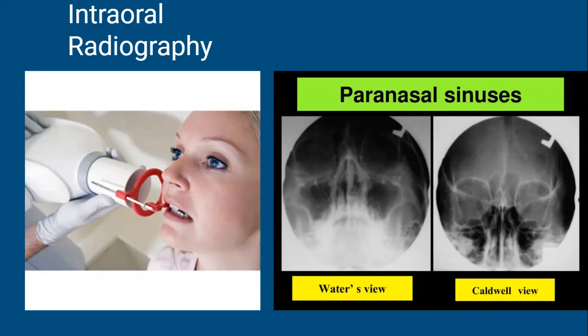Because the Caldwell and Wolters views are so similar, make sure you catch the differences. The Caldwell view is going to show the hard palate, the nasal septum, the orbital floor, and the zygoma very well. For the basal view, I don't have a picture, but the main point is that it is best at showing zygomatic fractures.